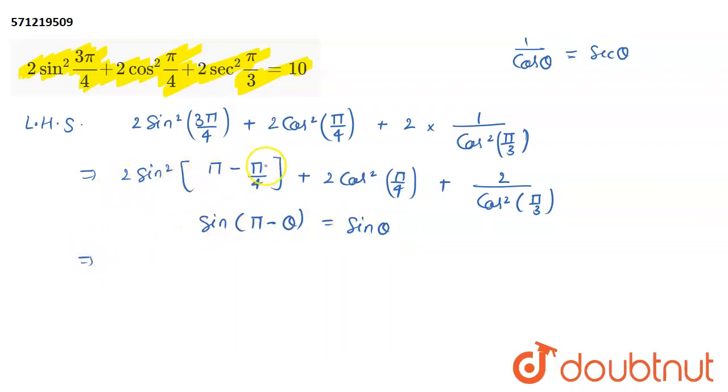So, instead of sin(π - π/4), I can put sin θ, or that is sin(π/4), where theta is π/4 in this scenario. So, it becomes twice sin²(π/4), plus 2cos²(π/4), plus 2 divided by cos²(π/3).